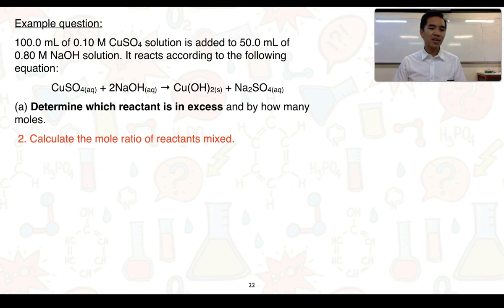Step two, we then need to calculate the mole ratio of reactants that are mixed. So if we represent it in this form here, it's equal to 0.010 to 0.040, if we compare copper sulfate to sodium hydroxide. What we can then do is simplify this so that we've got a whole number ratio present, and hopefully you can see that this simplifies to a ratio of 1 to 4 for copper sulfate to sodium hydroxide.